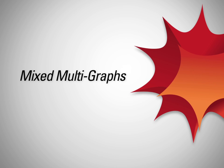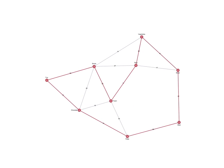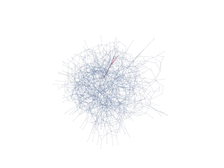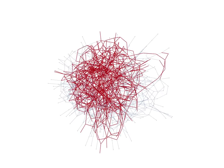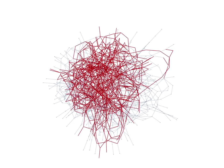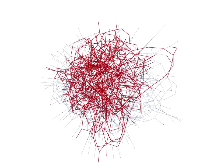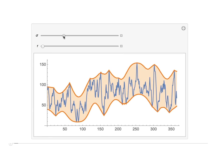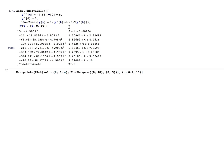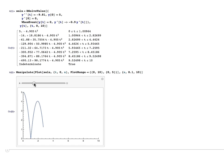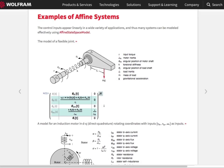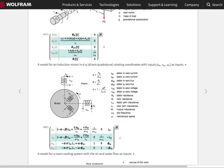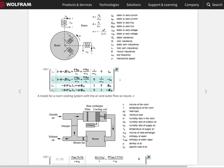Many other key domains of computation have been enhanced. Graph computations have been extended to support mixed multigraphs. New path and tour finding algorithms have been added, making social network analysis or network optimization in transport and communications even easier. Signal processing has been extended with new peak, baseline, and envelope detection. New calculus includes symbolic solutions for event-driven and delayed differential equations. And control theory functions now support affine and non-linear control models.